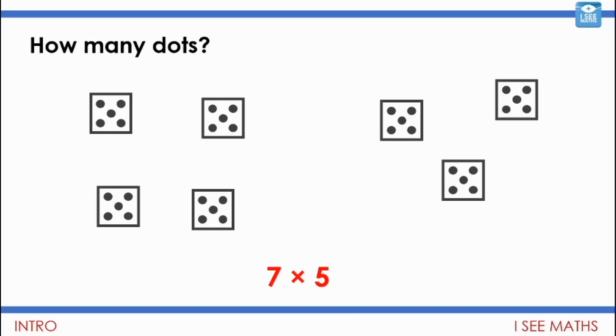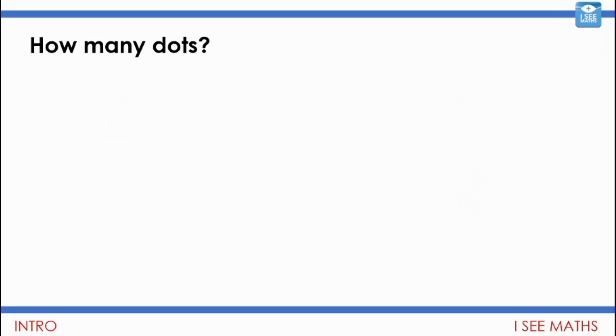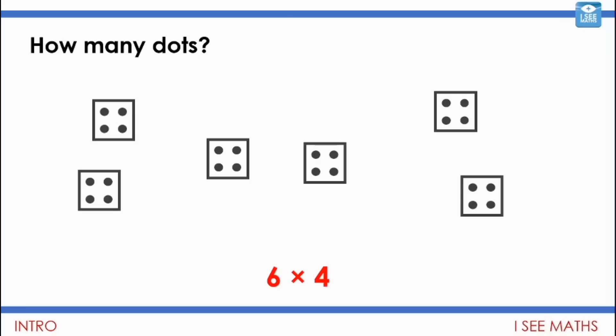And our last example for the warm-up. How many dots? Hmm, what did you see that time? I wonder which multiplication number sentence you saw. Again, if you need to, pause the video. But otherwise, let's have a look. How many dots were there? Well, there were 6 lots of 4. And 6 lots of 4 dots is 24 in total.